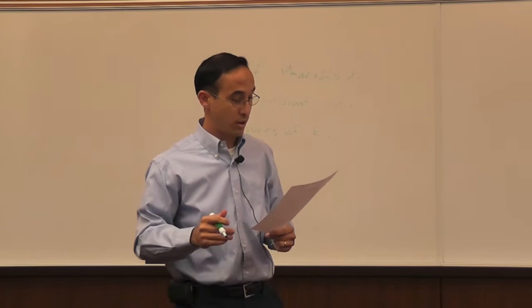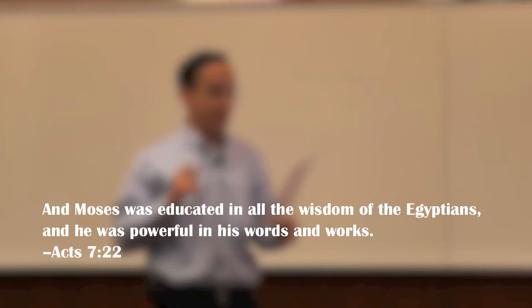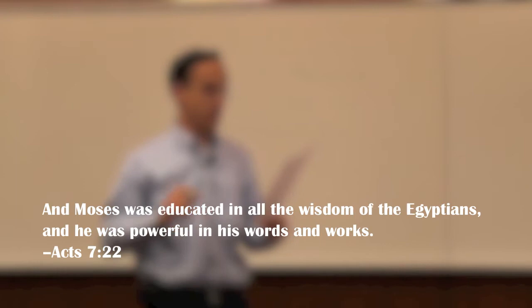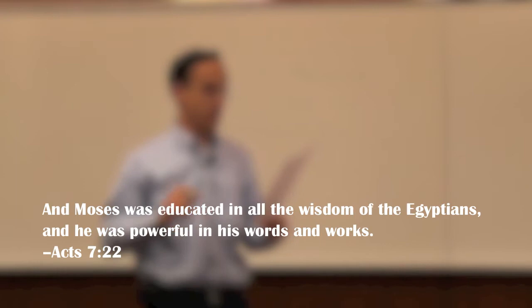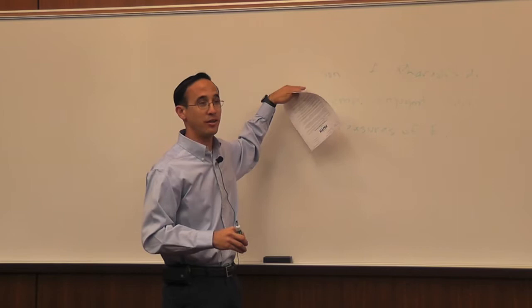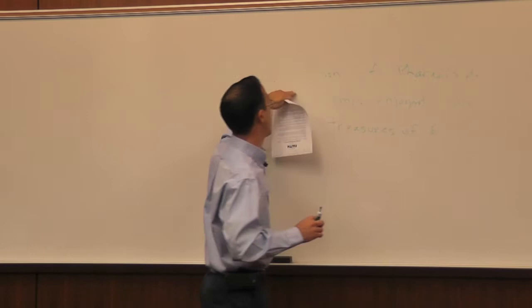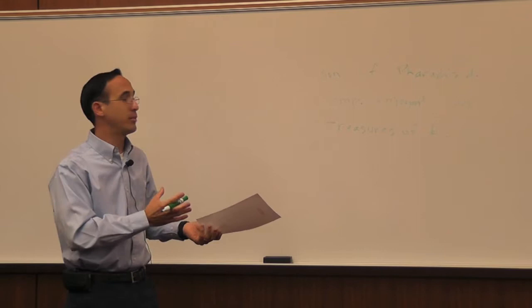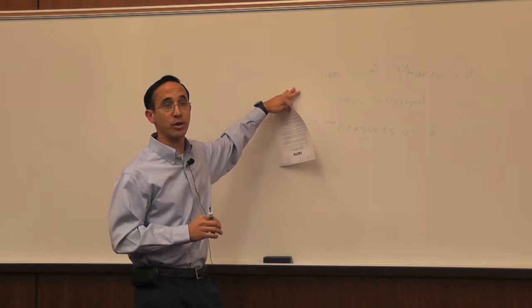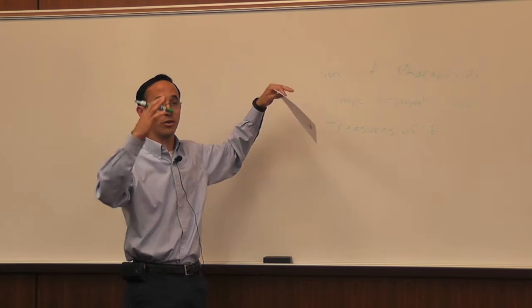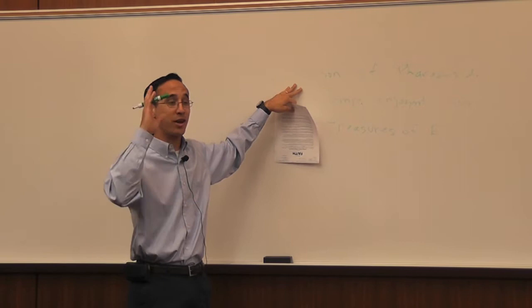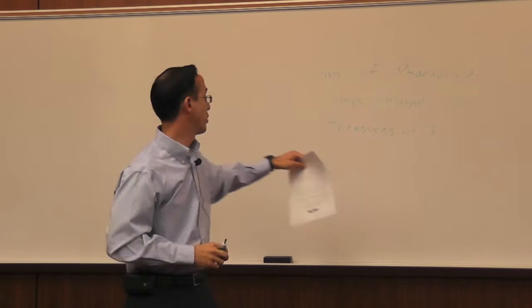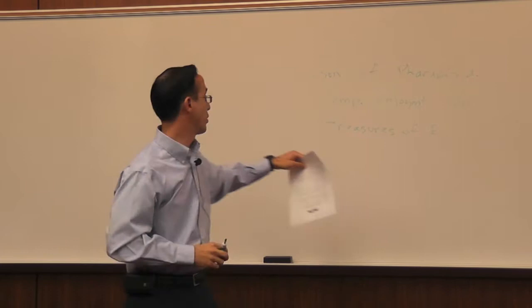If you look at Acts 7:22-24, it says Moses was educated in all the wisdom of the Egyptians, and he was powerful in his words and works. He was the son of two God-fearing parents who were part of the children of Israel, but Pharaoh's daughter took him in as her own son. Because of that, he was considered part of the royal household — very wise and very powerful. He surely had a bright future as part of Pharaoh's household.